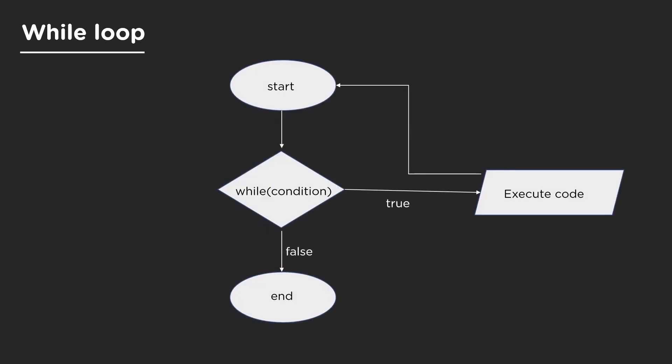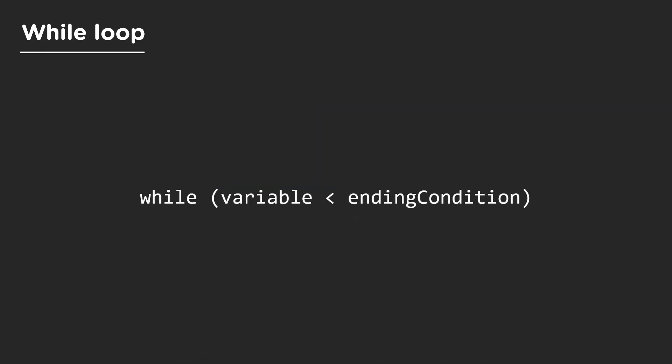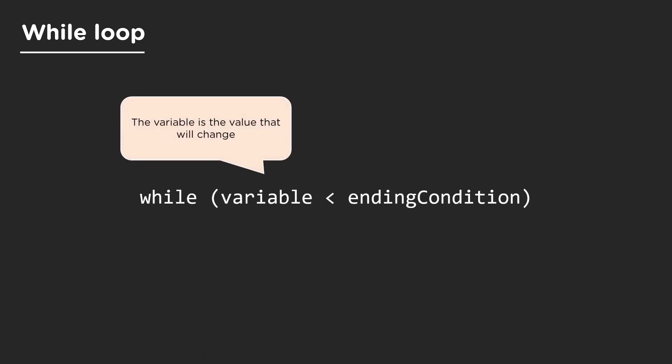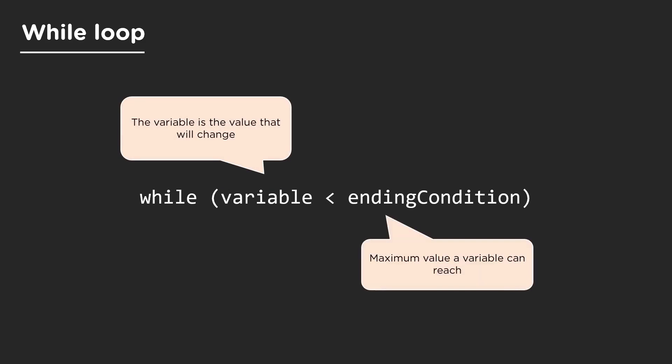Next up is a while loop. The logic is similar to that of a for loop — first the condition is checked, and if the condition holds true then the code is executed, and if it is false it terminates. Let's understand the general syntax. First you have the variable whose value keeps changing, and then you have the ending condition, which is the maximum value a variable can reach. Let's go back to VS Code.